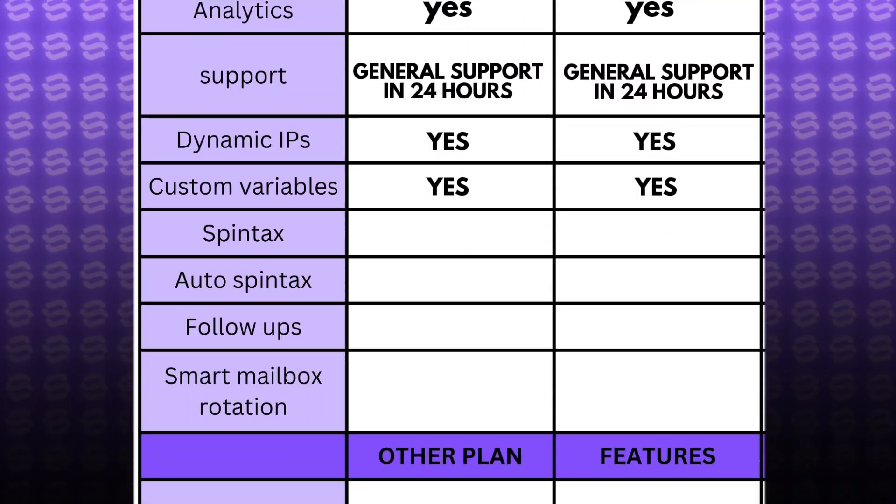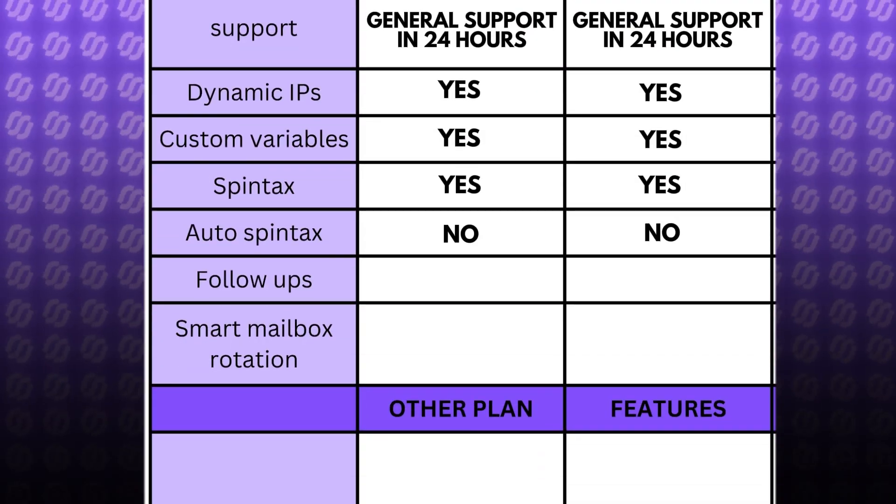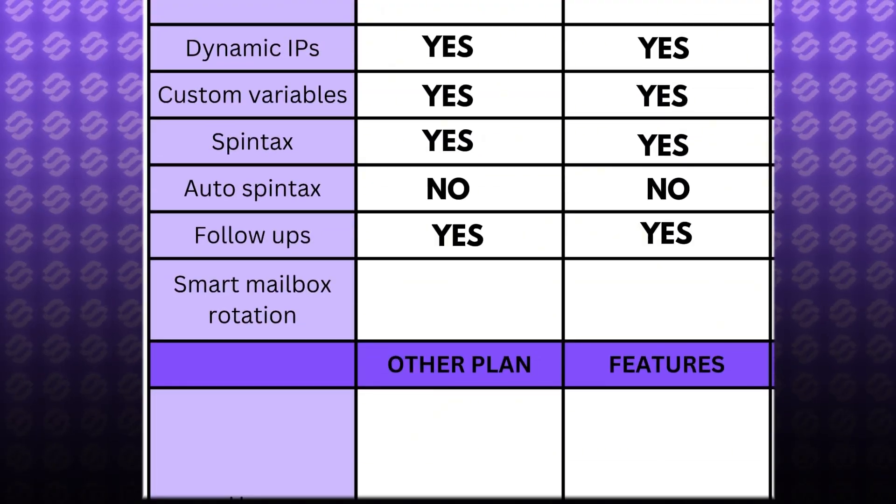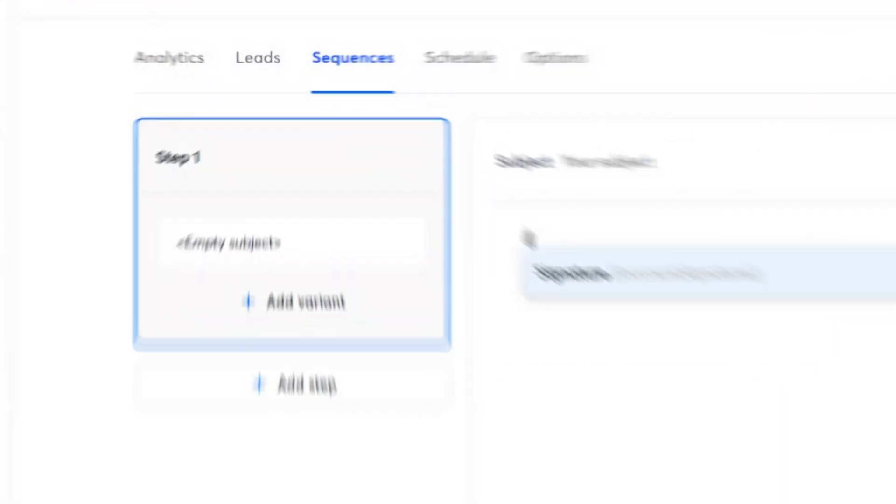Both platforms support Spintax, making it easy for you to increase deliverability and send unique emails to each recipient. Spintax is relatively easy to do in either platform, but unfortunately there's no option to add Spintax automatically. Instantly and Smartlead both support email follow-ups and there aren't really any restrictions when it comes to this. You can send as many follow-ups as you'd like from each platform with a relatively simple setup. Keep in mind that follow-ups also count as emails sent in the sequence itself and per mailbox, so be aware of these limits.